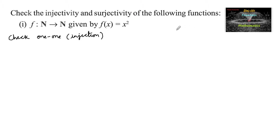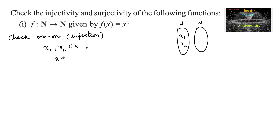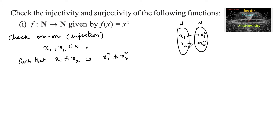Since the domain and codomain both are natural numbers, let us consider two different natural numbers x₁, x₂ ∈ ℕ such that x₁ ≠ x₂. The squares of two different natural numbers are also not equal, that is x₁² ≠ x₂². The images of x₁ and x₂ are unequal, so f(x₁) ≠ f(x₂). Hence f is one-to-one.